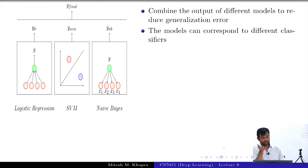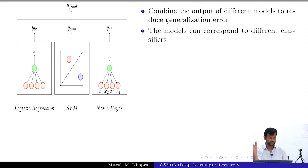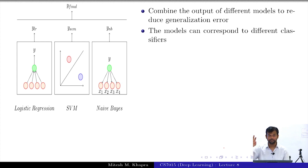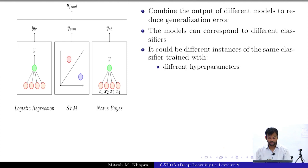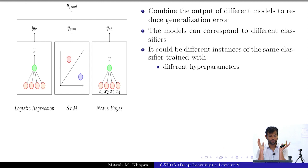The models could correspond to different classifiers. For example, a logistic regression, an SVM, and a naive Bayes. You train them independently using the same data or different subsets of the data, and at test time you take a prediction from all of them and take an ensemble of those predictions. It could also be different instances of the same classifier trained with different hyperparameters, such as the same three-layered neural network trained with different hyperparameters.